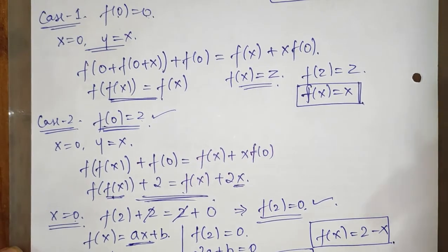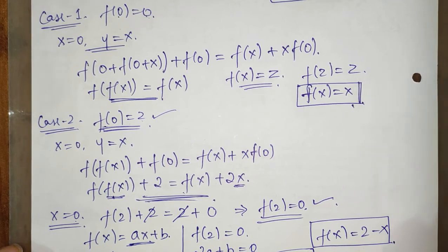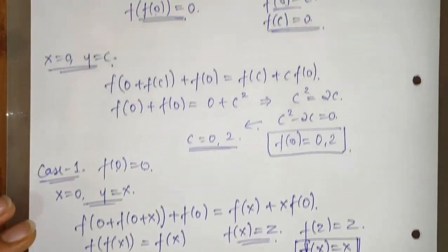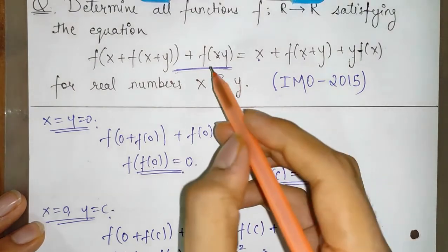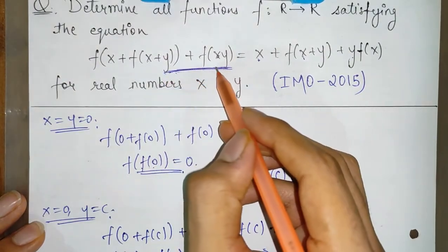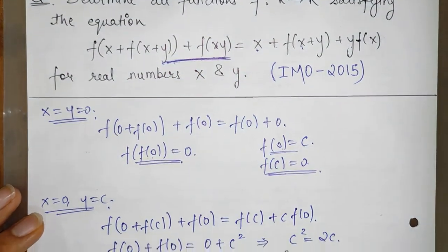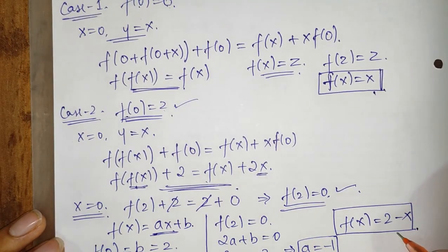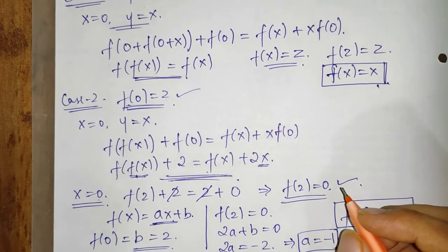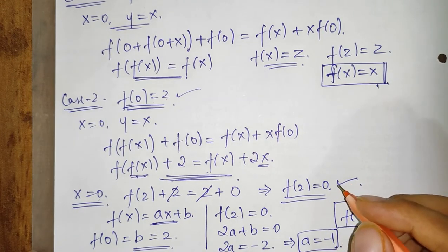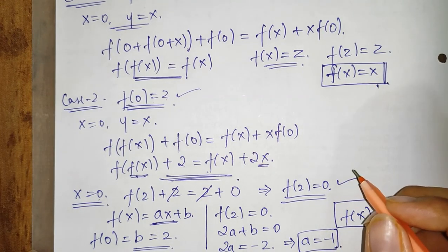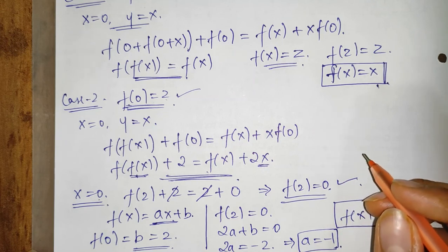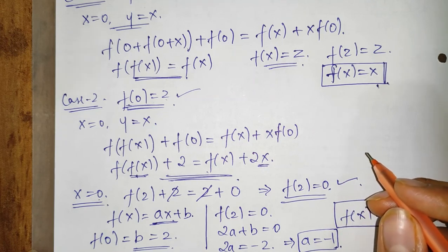So we got the two functions: f(x) = x and f(x) = 2 - x, both of which satisfy the given equation. If you liked the video, please press the like button, and if you haven't subscribed to my channel, do hit the subscribe button for more interesting videos on mathematics. Till then, goodbye.